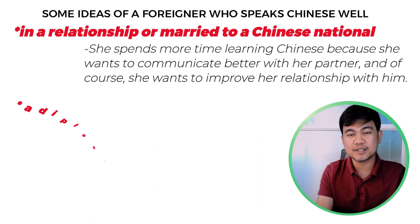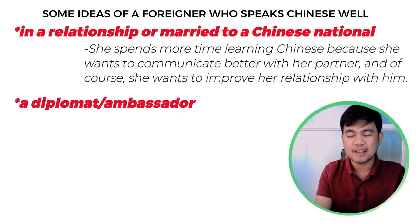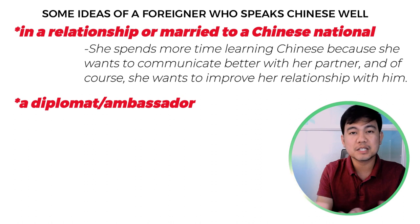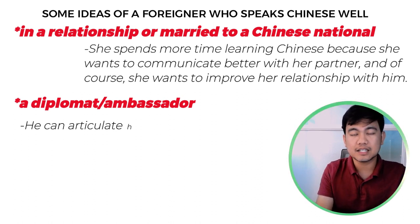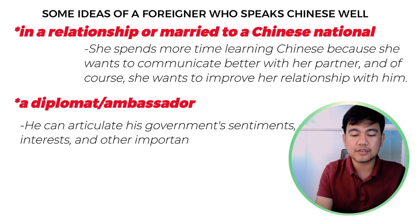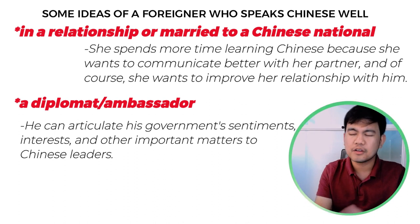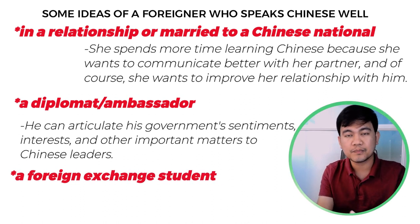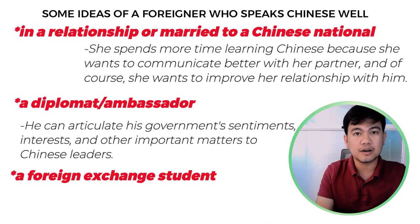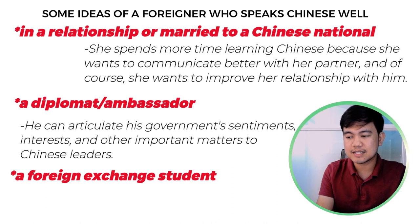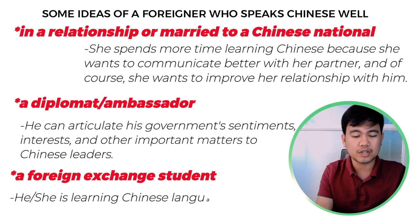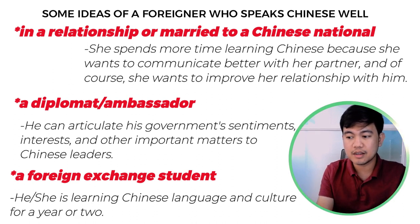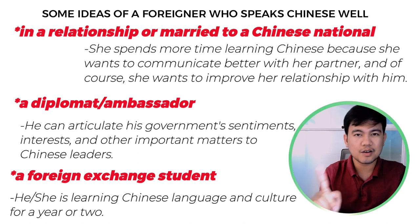Second, you can talk about a foreign person who works as a diplomat to China. Of course, when you are a representative of your country to China, you must be able to speak their language so you can articulate your government's sentiments, interests, and other important matters to the leaders in China. Third, you can talk about a foreign exchange student studying in China — for example, a student from a western country who spends a year or two studying Chinese language or culture at one of the best universities in China. Pick one of these and develop a story out of your choice.